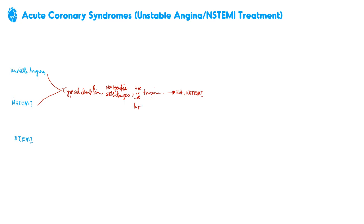So we made our diagnosis. We did further testing — an echo, some other labs including hemoglobin A1C and a lipid panel. We made our diagnosis of unstable angina and NSTEMI. Remember, these are definitely acute coronary syndrome, and it doesn't matter whether it's unstable angina or NSTEMI — the treatment for both is going to be the same.